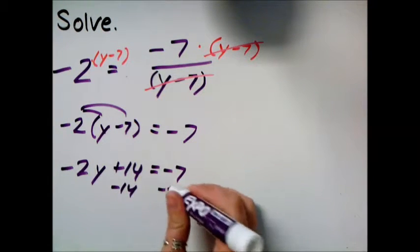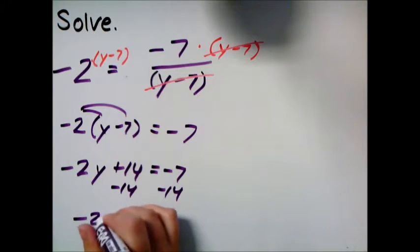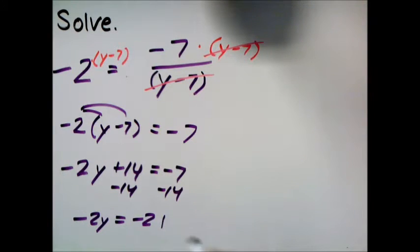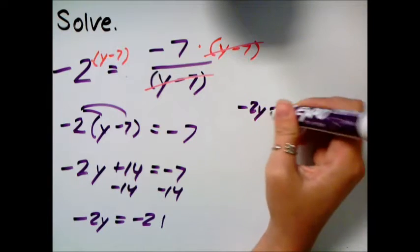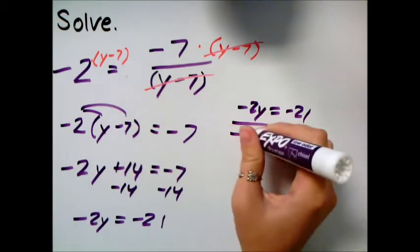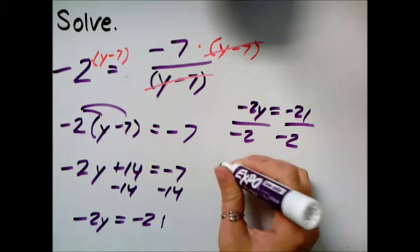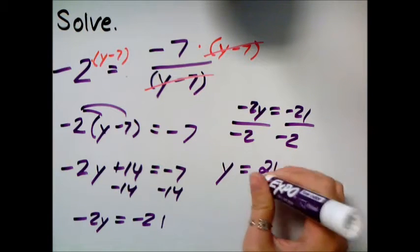If you subtract 14 from both sides, so negative 2y equals negative 21. And divide both sides by negative 2. And so the negatives cancel, y equals 21 over 2.